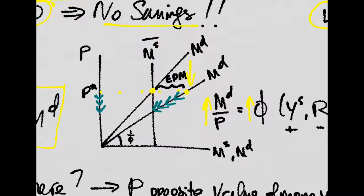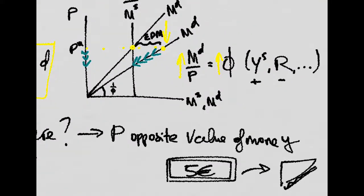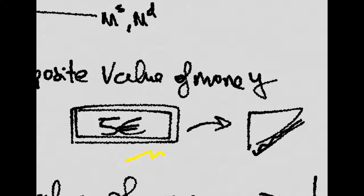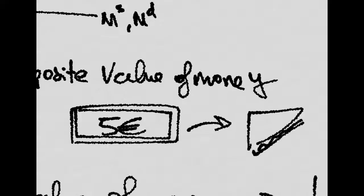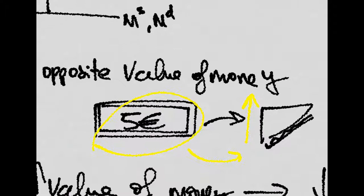If you have seen the ISLM videos, you might wonder why price is on the axis and not the interest rate. The answer is that prices are the opposite of the value of money. For example, imagine you have 5 euros in your pocket and every day you buy a sandwich that costs 5 euros. If prices go up and the sandwich costs more, you cannot buy it anymore with those 5 euros. So when prices go up, the value of money goes down — they are the opposite.